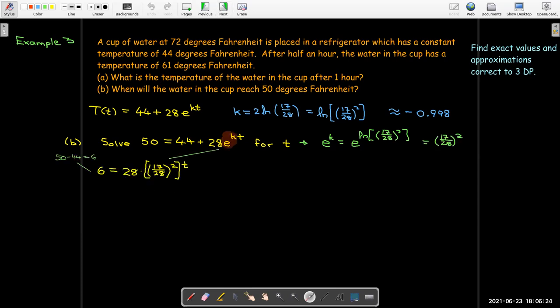So now if I subtract 44 from each side, I'll get 6. So 6 equals 28 times the fraction 17 over 28 quantity squared to the power of t. Divide both sides by 28. Here I can't do any simplification like I did in the previous problem because I don't know the value of t. So I just have to write this as 17 over 28 to the power of 2t. I just took the product of the exponents here.